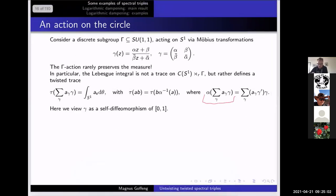This automorphism is actually not defined on the whole reduced cross product — it's just defined densely. It relates heavily to a KMS state: you can define a certain action of the real numbers on this cross product, and this integral against Lebesgue measure will be a KMS state. What is γ' on the right-hand side of this equality? So if we view γ as a self-diffeomorphism of the unit interval, it's really just the derivative of this as a function from the unit interval to itself. Prime means derivative.